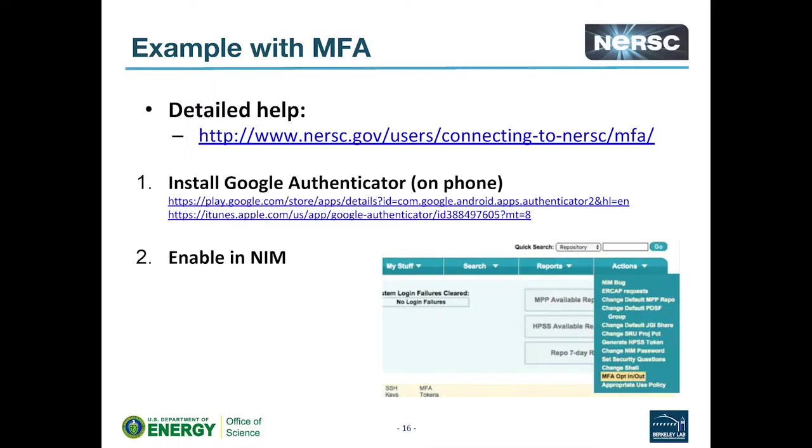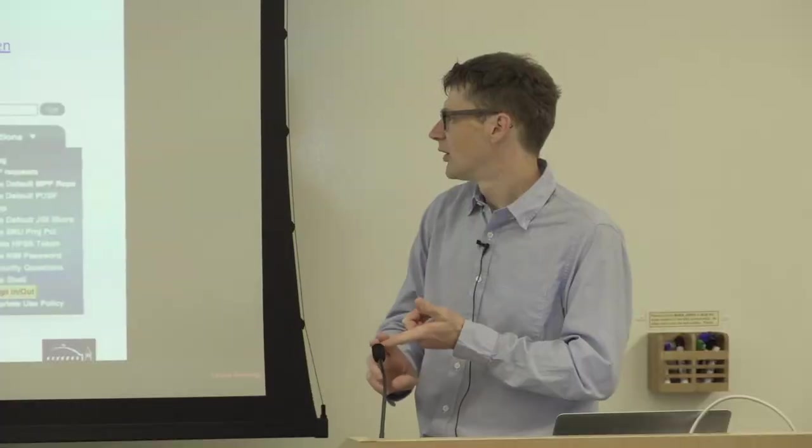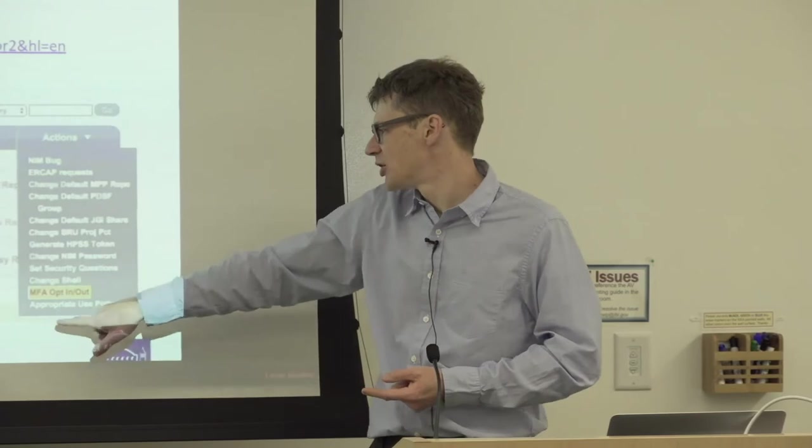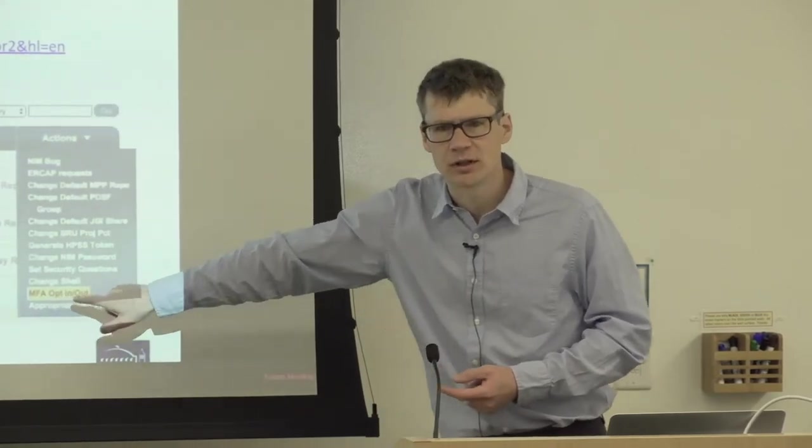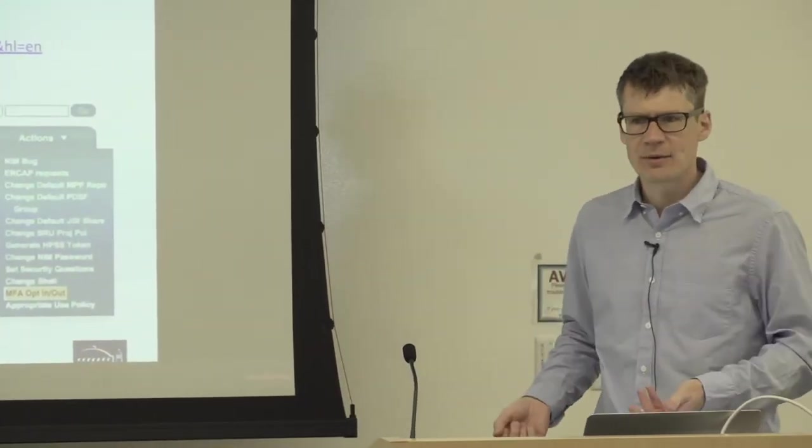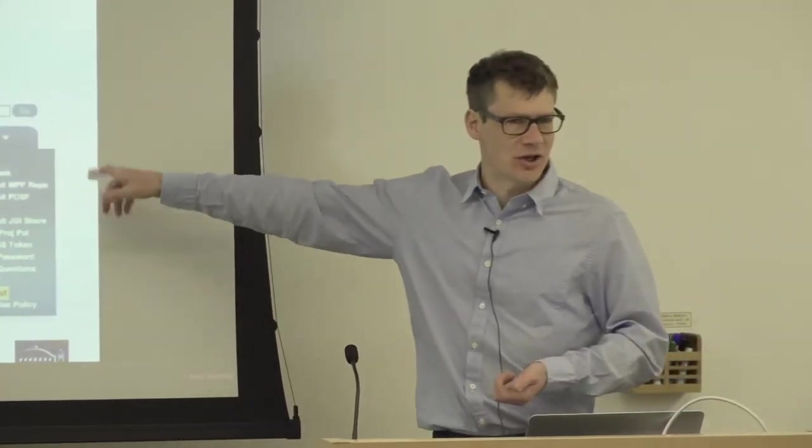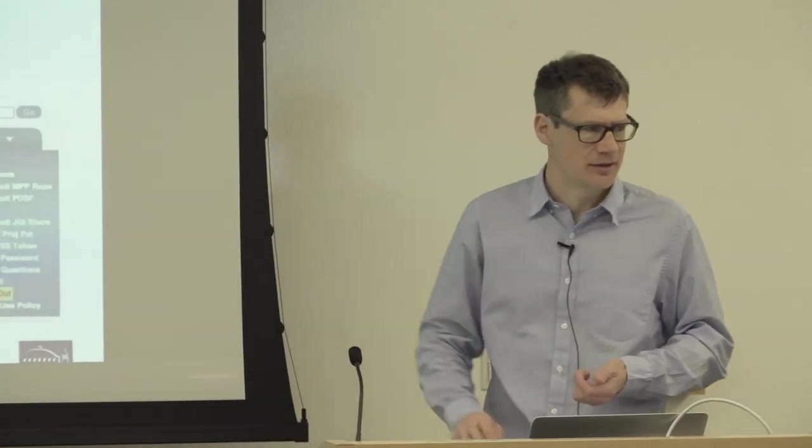Okay. For a quick walkthrough of how to enable and use MFA. There's a link up here if you're following through on the slides to the detailed help, which goes through step by step with diagrams of what to click first. You'll need to install Google authenticator on your phone, then enable it in NIM. So there's a submenu under actions here that says MFA opt-in opt-out. If you try MFA and for some reason it doesn't work for you, don't panic. You can just go back into NIM and opt-out and it's immediate.